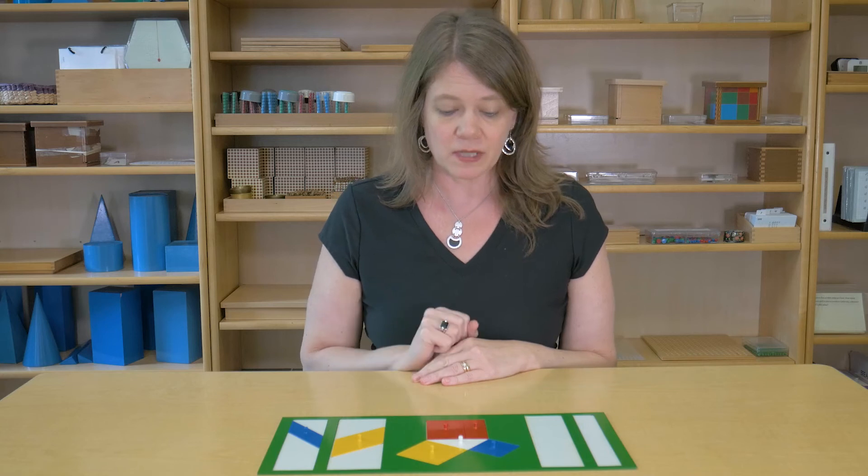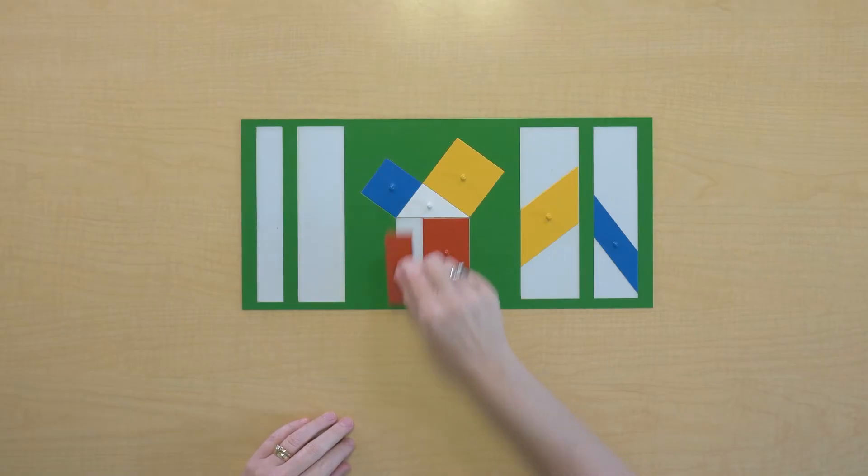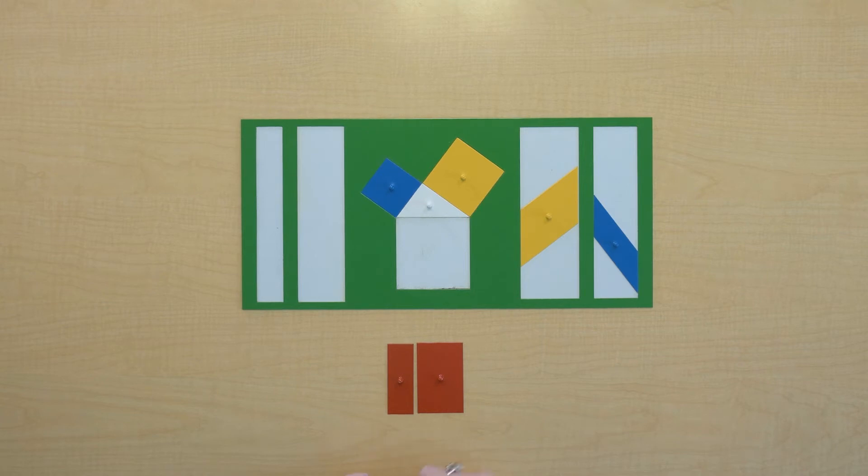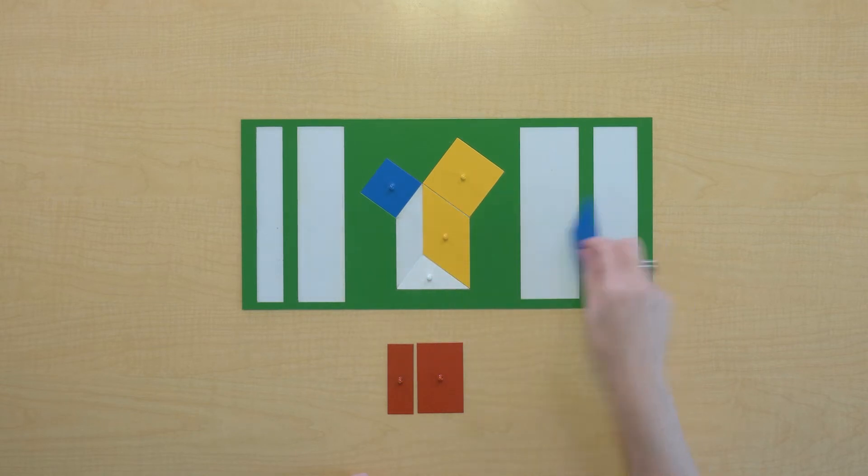So the first thing I'm going to do is I'm going to take out our red square. And now I'm going to slide this triangle down right here and use these parallelograms to take up that space.